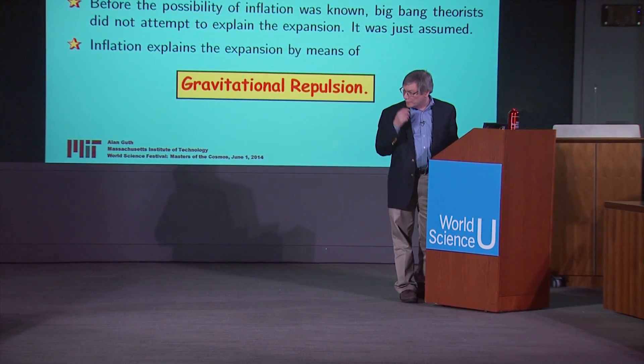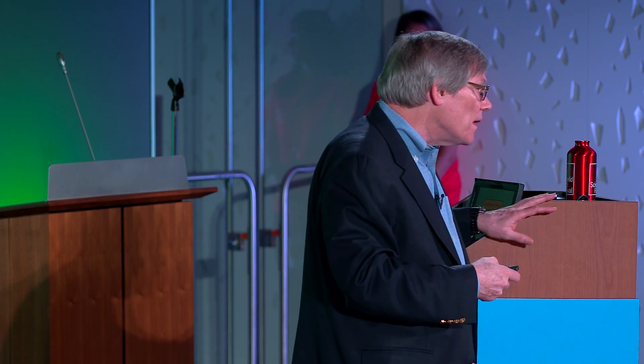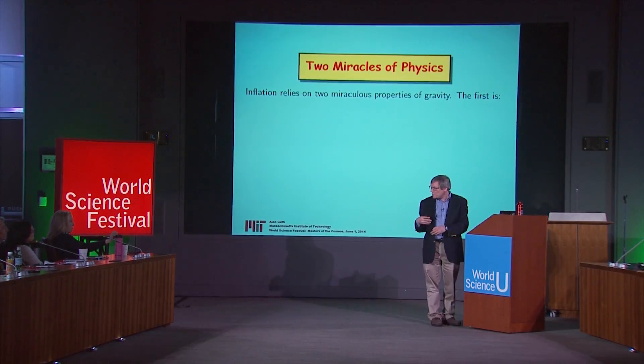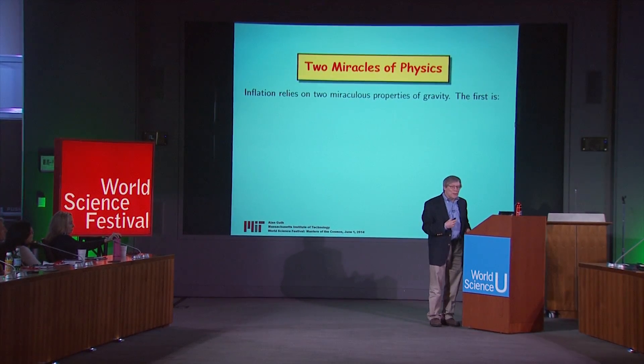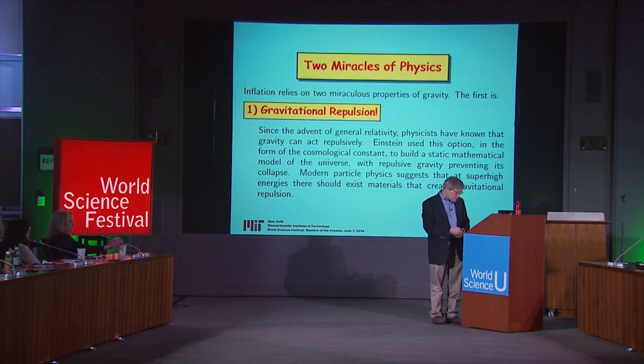Inflation explains this expansion in terms of gravitational repulsion — a repulsive form of gravity, which is somewhat novel to physics. In Newtonian physics, gravity is always attractive. But in the context of general relativity, gravity can become repulsive. The idea of repulsive gravity is so novel that I consider it a kind of miracle of physics — where I'll define a miracle of physics as anything I would not have believed to be true when I got my PhD. The theory of inflation depends on two miracles, and the first of those is this miracle of gravitational repulsion.